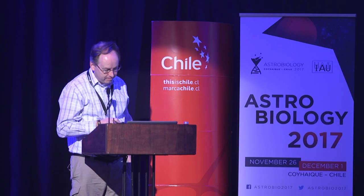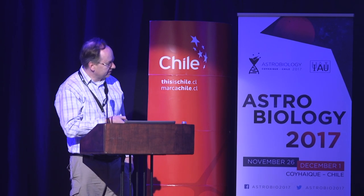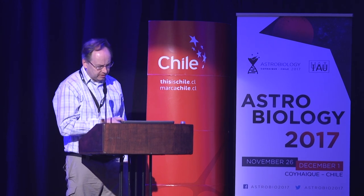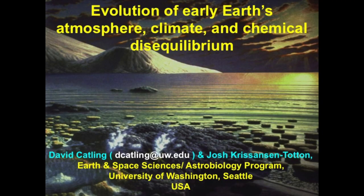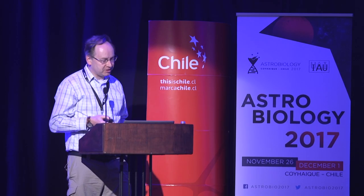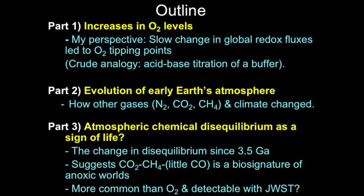I'm David Catling at the University of Washington in Seattle. This is an outline of what I'm going to talk about. The first topic is how the atmosphere changed and increases in oxygen levels, which basically determined the history of our planet. It's why we're here — we're breathing oxygen — but it also affected many other gases and biogeochemical cycles.